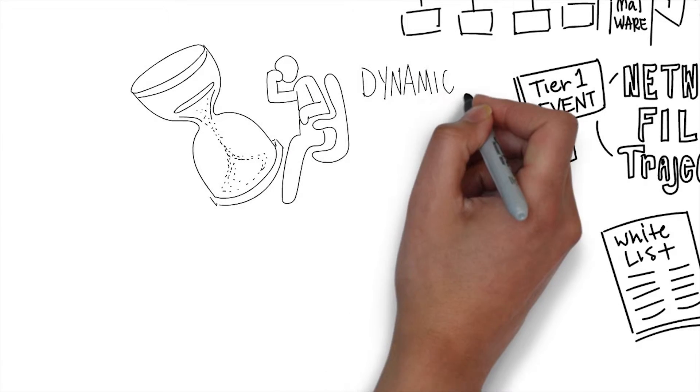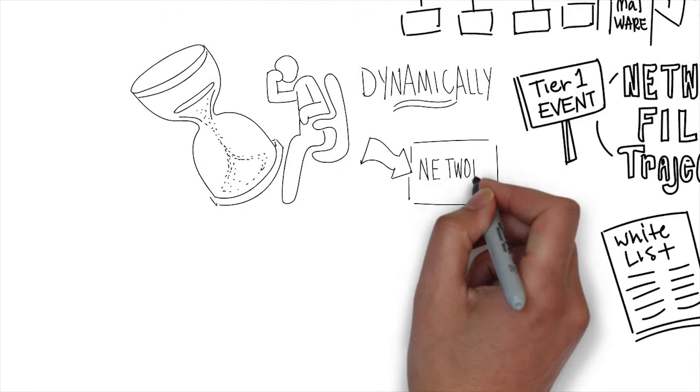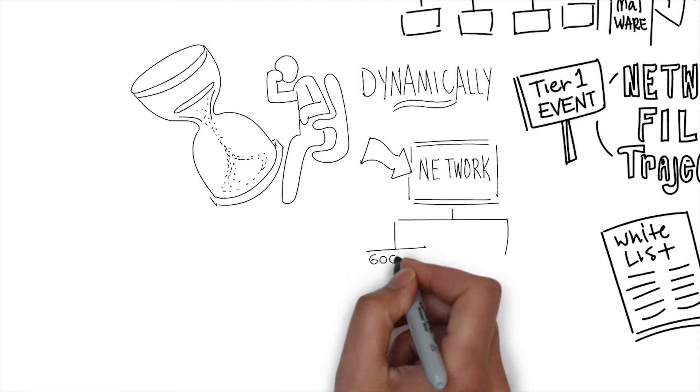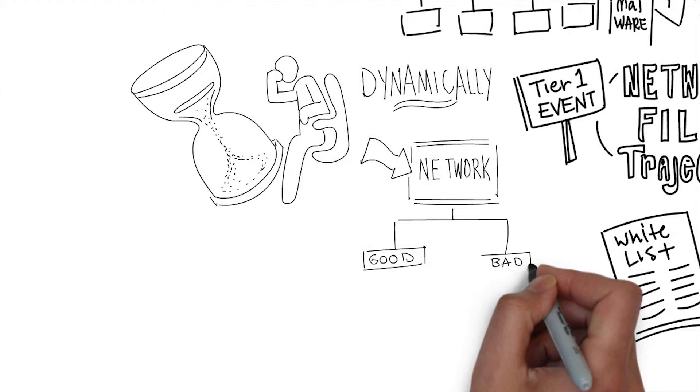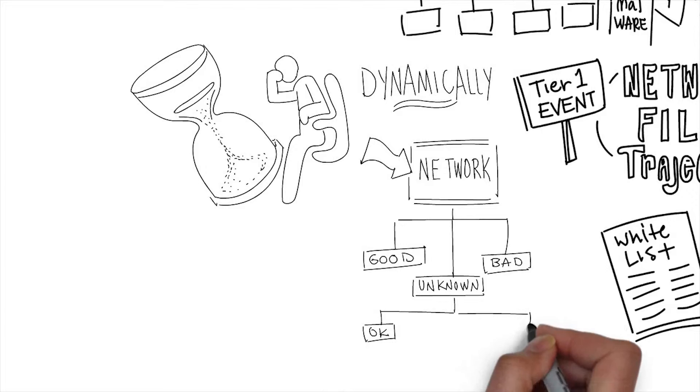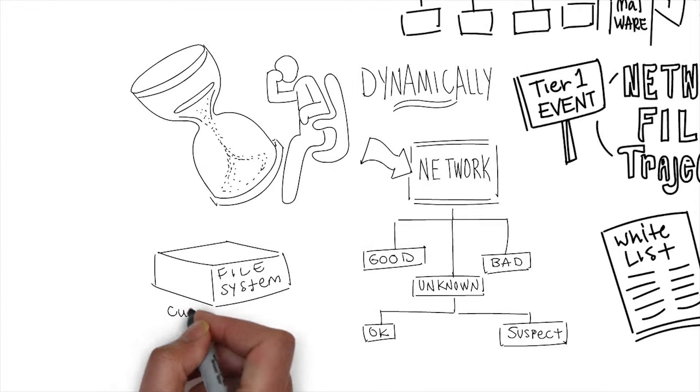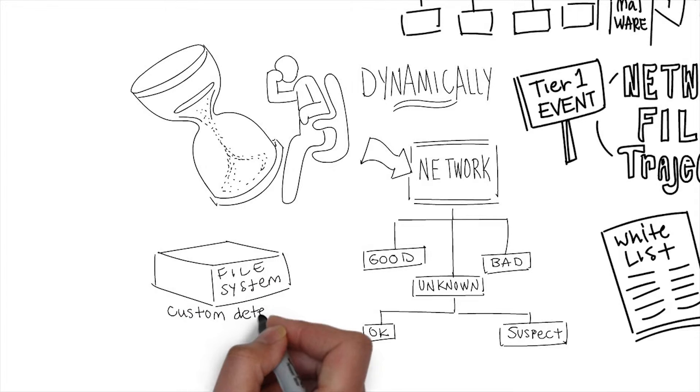Just like we're watching everything that's coming in our network and determining if it's good or bad, and if it's unknown, be able to tell us at a later point in time whether it has become suspect, we need to do the same thing on a particular file system. This particular executable touched these processes, this is how it behaves. Now we can create custom detection for it.